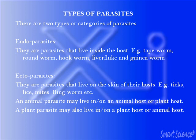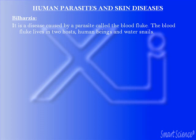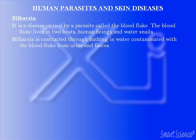Let's consider some human parasites and the diseases they cause. The first is bilharzia, a disease caused by a parasite called the blood fluke. The blood fluke lives in two hosts: human beings and the water snail. At one point the parasite may be living in human beings, and at another point of its life cycle it lives in the water snail. Bilharzia is contracted through bathing in water contaminated with the blood fluke from the urine or faeces of infected people.